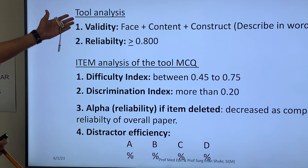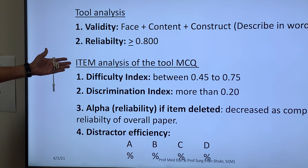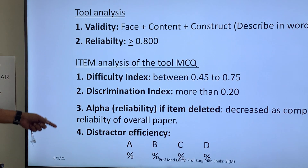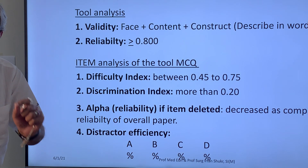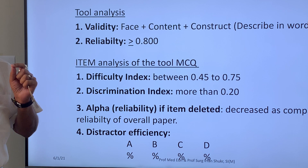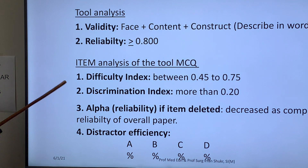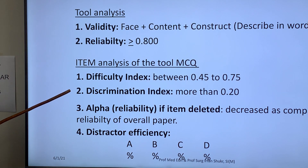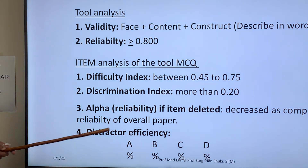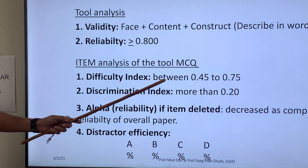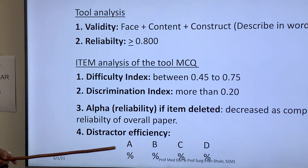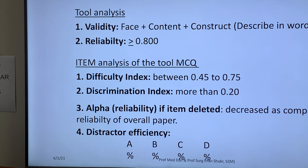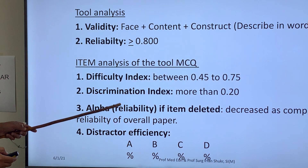After commenting upon the characteristics of the tool, we then talk about each individual item — each individual question. We should be able to comment upon or find out the following four characteristics of each question in a tool. If there are 100 MCQs, then for each MCQ we should know: difficulty index between 0.45 to 0.75, discrimination index more than 0.20, alpha if item deleted, and distractor efficiency.